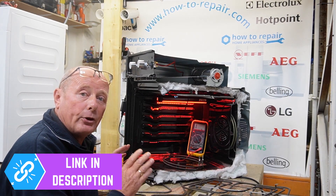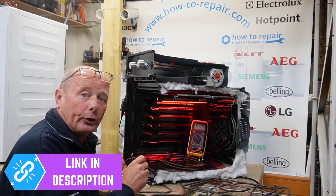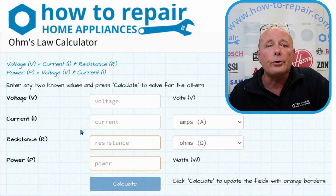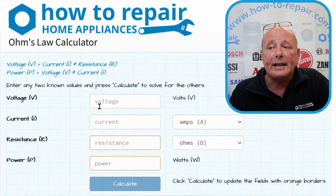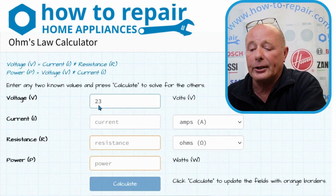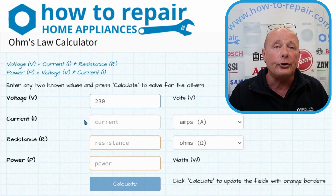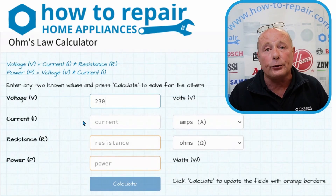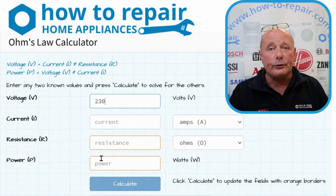We're just dealing with Ohm's law and I'm going to show you how to test elements using the calculator, which is also in the description below. For those of you who have never used an Ohm's law calculator before, let me quickly show you the three ways in which I use it. You always need a base voltage — we are testing at 230 volts, which is stamped on all the elements. Although we live in the United Kingdom and draw 240 volts, our voltage does vary between 230 and 240. You must also fill in one of the other three fields.